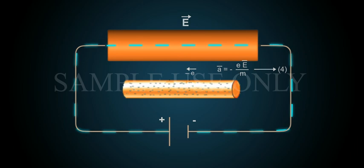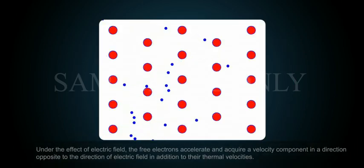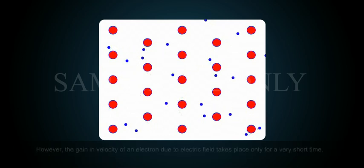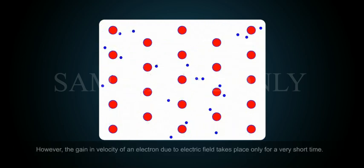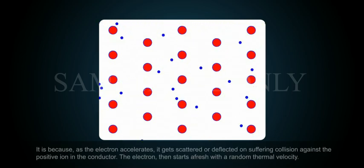Under the effect of electric field, the free electrons accelerate and acquire a velocity component in a direction opposite to the direction of electric field in addition to their thermal velocities. However, the gain in velocity of an electron due to electric field takes place only for a very short time. It is because as the electron accelerates, it gets scattered or deflected on suffering collision against the positive ion in the conductor. The electron then starts afresh with a random thermal velocity.